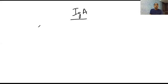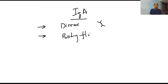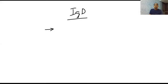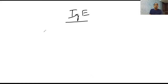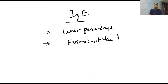IgA is a dimer, found in body fluids such as saliva and mucus. IgD are surface antibodies found on the surface of the B cell. IgE are of the least percentage and are formed at the time of allergy. This covers the main types of antibodies.